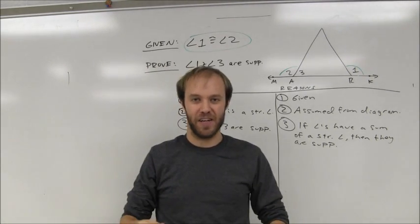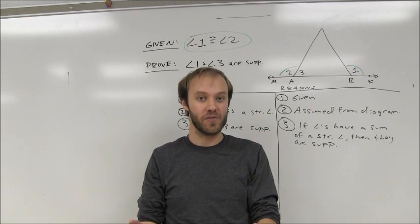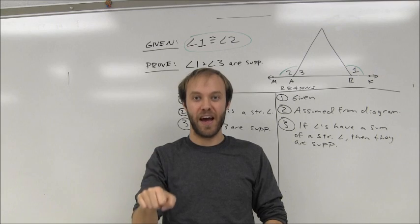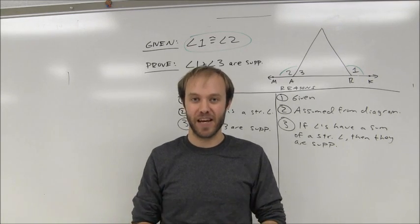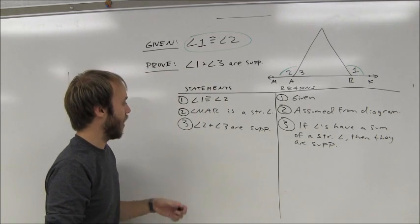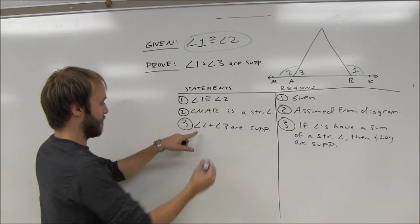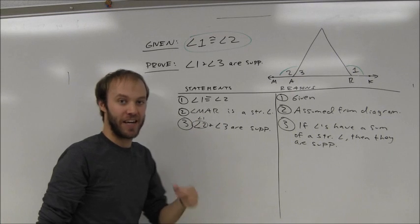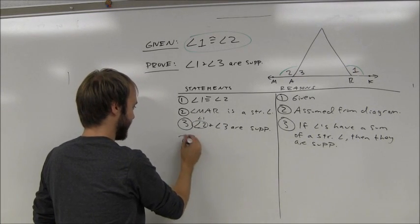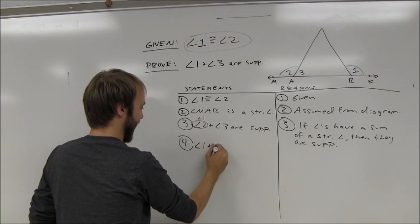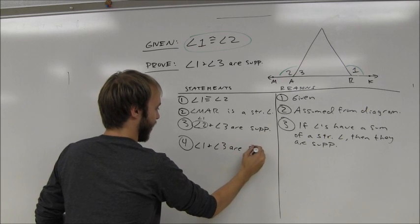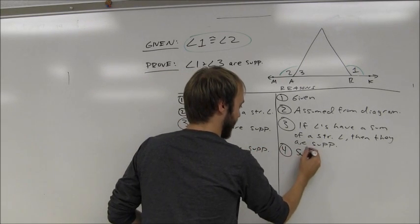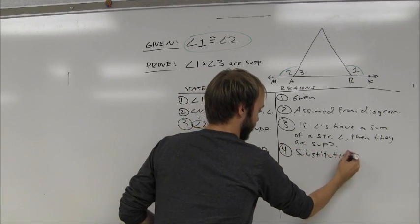The substitution property tells me if I have things that are congruent to each other, I can put one of those in place of one of the other values in a statement and get another statement that's equivalent. So I'm going to substitute here. In place of angle 2, I'm going to substitute angle 1 and I'm going to get a new statement. That statement says that angle 1 and angle 3 are supplementary. All I have to state here is that I'm using substitution.